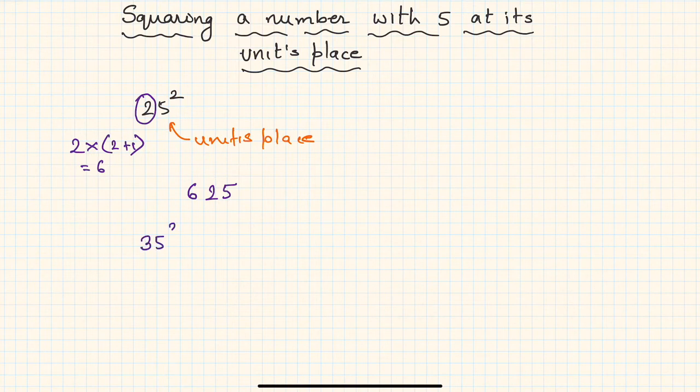Let us take another example. Let's say we have to find out 35 squared. The last two digits will be 25, and for the other digits you need to simply multiply 3 with 3 plus 1, which is 3 into 4, which is 12. So the square of 35 is 1225.